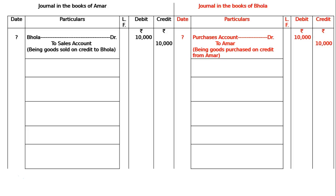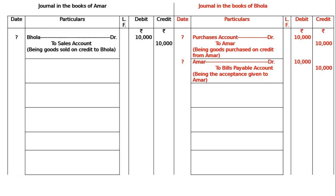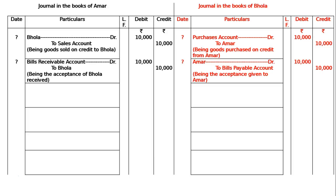In the books of Bhola: Ammar debited to Bills Payable account, being the acceptance given to Ammar Rs.10,000 each in both debit and credit columns. In the books of Ammar: Bills Receivable account debited to Bhola, being the acceptance of Bhola received — Rs.10,000 and Rs.10,000.